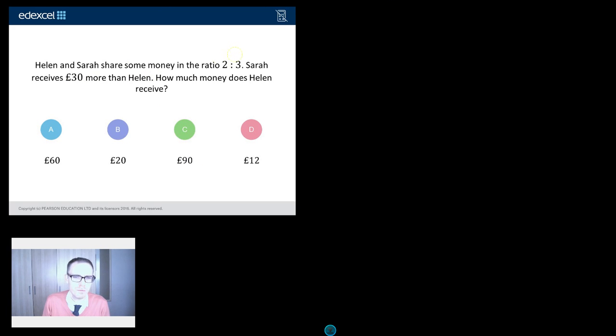Helen and Sarah share some money in the ratio 2 to 3. Let's give that a little highlight. Sarah receives £30 more than Helen. How much money does Helen receive?